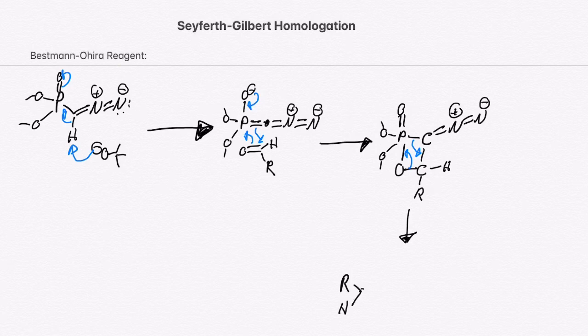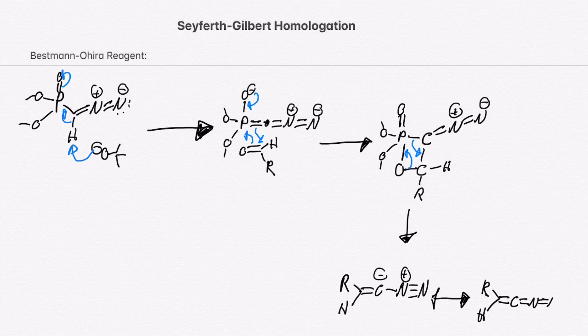Now, in the next step, I'm going to draw out the two resonance structures that we get from this reaction. Starting with the resonance structure on the right, we can push the electrons down from the nitrogen, forming a triple bond, giving that carbon a negative charge.